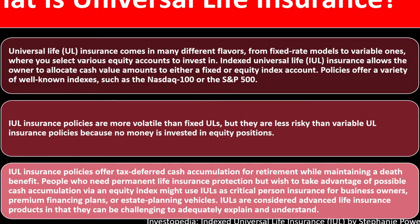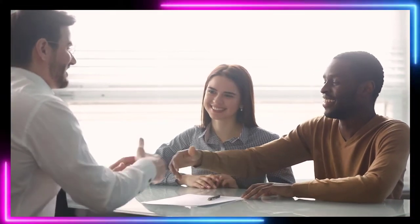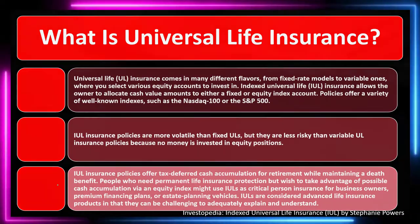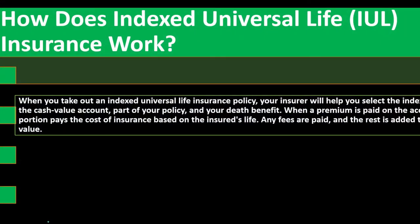People who need permanent life insurance protection but wish to take advantage of possible cash accumulation via an equity index might use IULs as critical person insurance for business owners, premium financing plans, or estate planning vehicles. IULs are considered advanced life insurance products in that they can be challenging to adequately explain and understand. You've got the life insurance component, an investment component, and you're tying that investment to a stock market or index structure which adds levels of complication. The only reason to add complication instead of just buying simple term life insurance and investing straightforward into the market is if you have more complex goals, possibly for larger or more high income individuals with advanced tax planning strategies and estate planning strategies.